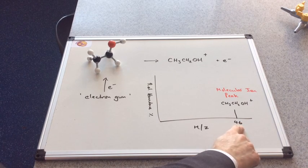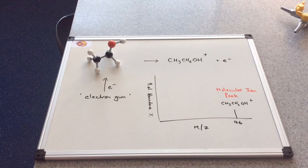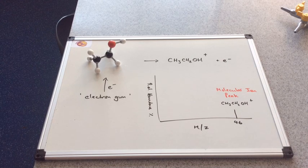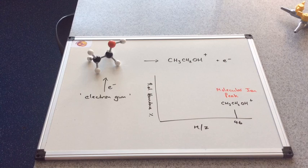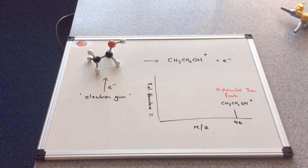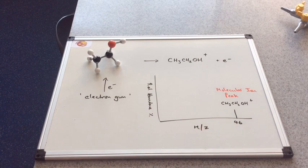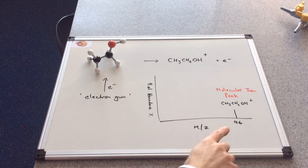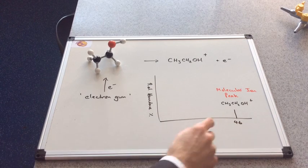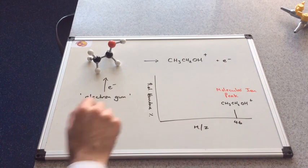This peak at 46 for ethanol has got a special name. It's called the molecular ion peak. What I sometimes say to students is, the most important peak in a mass spectrum for an organic molecule is the one furthest to the right-hand side, or the one with the highest mass-to-charge ratio. Because effectively, this peak here is telling us the MR of the molecule under investigation. So the molecule that's gone into the mass spectrometer, we now know, has an MR of 46.